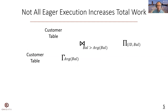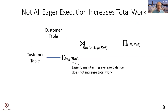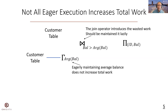Interestingly, not all eager executions will increase the total work. For example, eagerly maintaining the average balance for all newly inserted customers does not increase the total work, because this eager execution does not remove prior output tuples, and all newly inserted customers should be included to compute this average balance. It is the join operator that introduces the wasted work, and therefore it should be maintained lazily. This example motivates us to think about how to decompose this query into smaller pieces and execute them at different frequencies — some eagerly, some lazily.